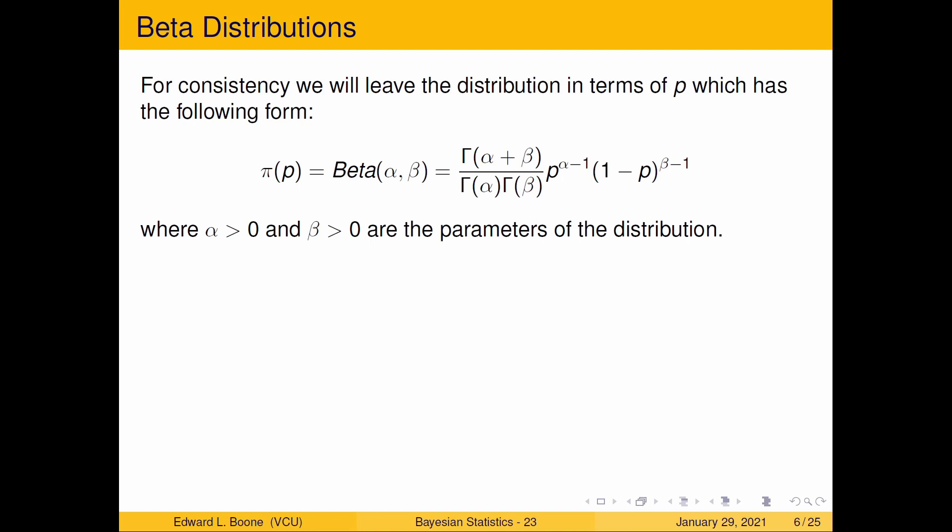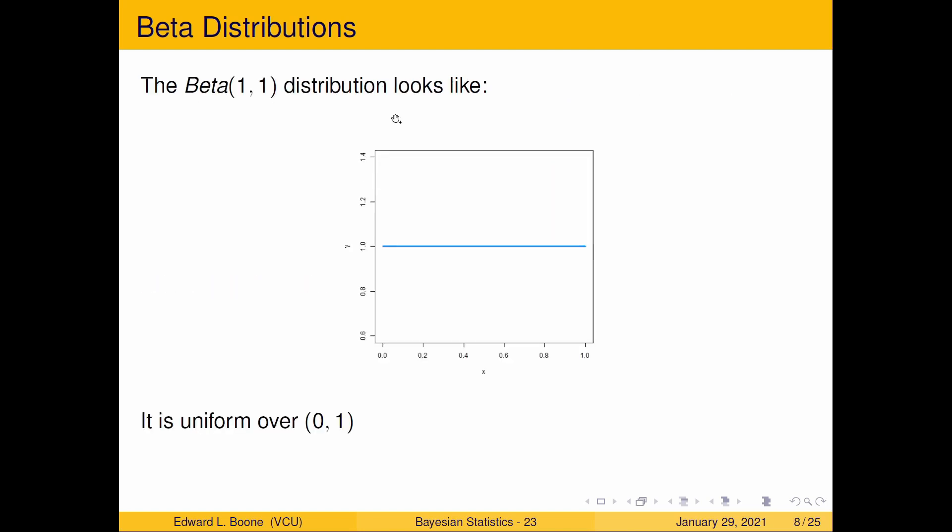Here a beta(1,1) looks like this—uniform over (0,1). If you plug in the numbers into the original density, you will see that you end up with the value 1, which is not very exciting in this case. It's just any value is equally likely between 0 and 1.